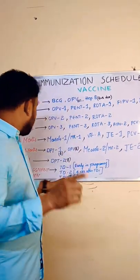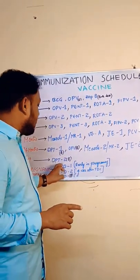Japanese encephalitis second and 5 to 6 years: DPT second booster.